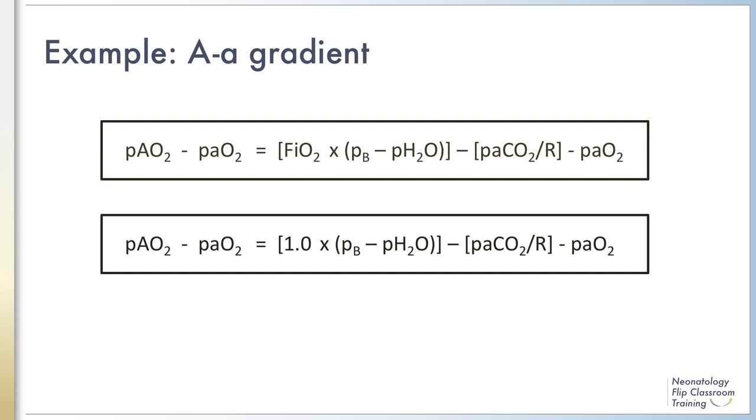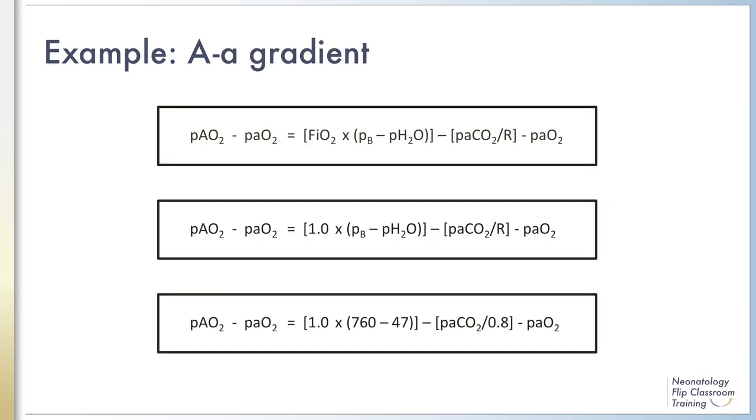First, let's review our equation and the pieces of information we already have. The FiO2 is 100%. Remember that in this equation, FiO2 is used in its decimal form, so 100% equals 1.0.